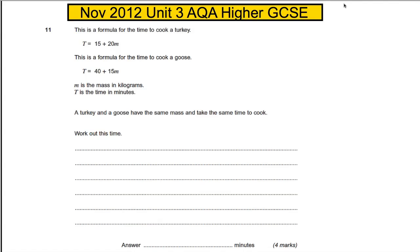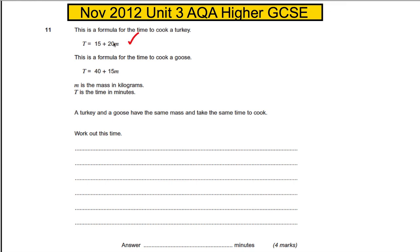Question 11. There's a formula for the time to cook a turkey: the time is 15 plus 20 times M, where M is the mass in kilograms, so that's 15 minutes plus 20 minutes for every kilogram. The formula to cook a goose is 40 minutes plus 15 minutes for every kilogram. A turkey and a goose have the same mass and take the same time to cook.